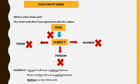Now let's talk about non-finite verbs. What is a non-finite verb? So, non-finite verbs don't have agreement with the subject. It does not change with the tense, and does not change with the number, and it does not change with the person. So here are some examples. There is a sentence: I found his office at a walking distance. And the second sentence: Adnan will find office at a walking distance. So here, walking is a non-finite verb. As you can see, found and find are finite verbs. But the walking, that is non-finite verb, because it does not perform any action in this sentence.